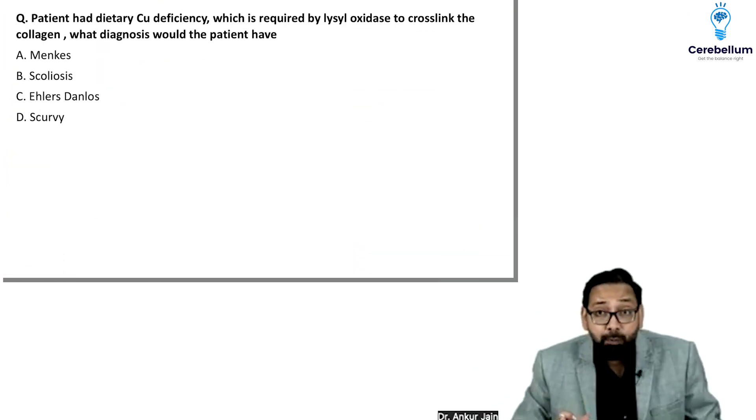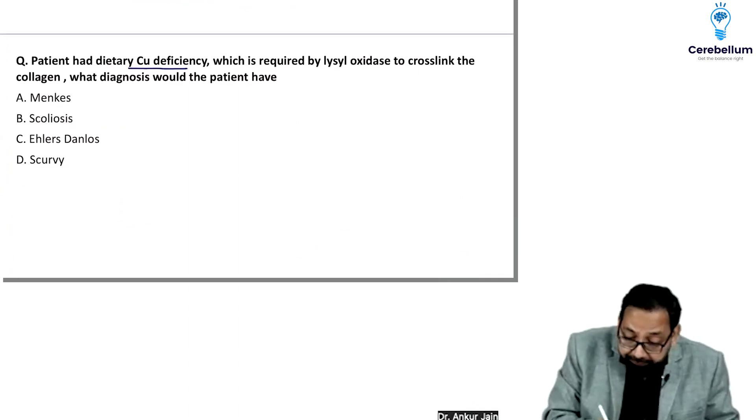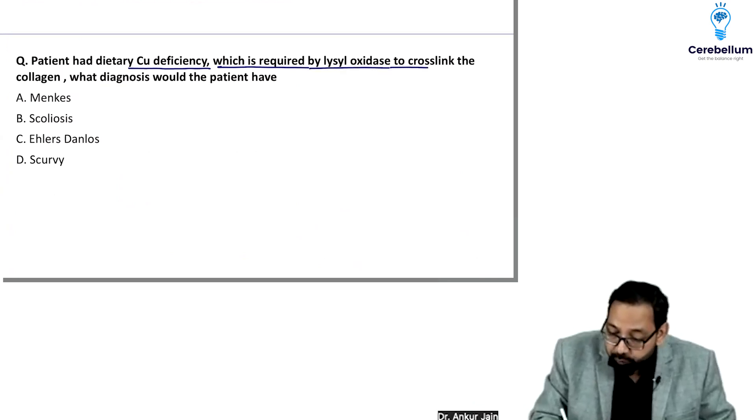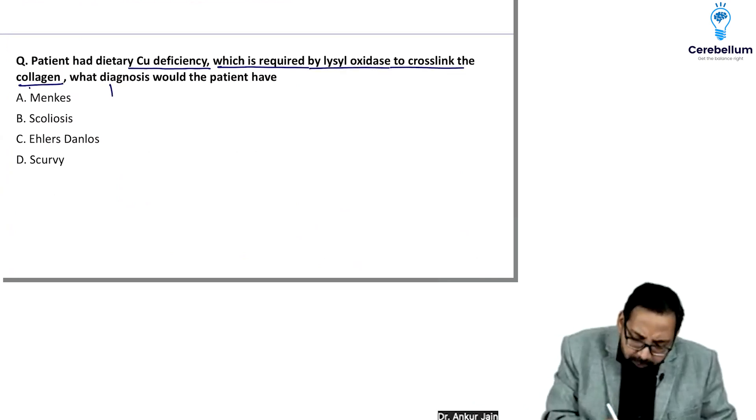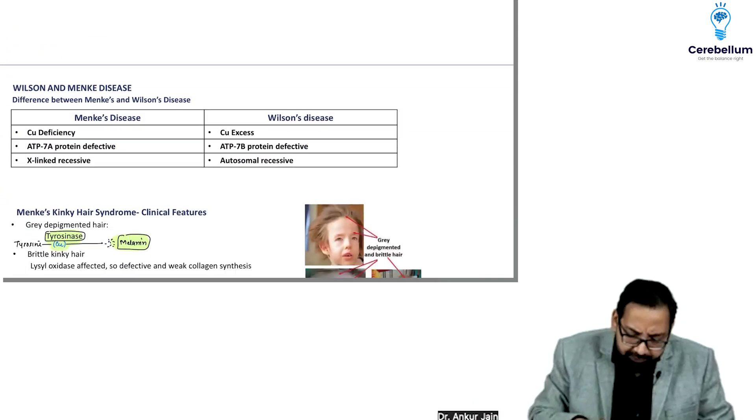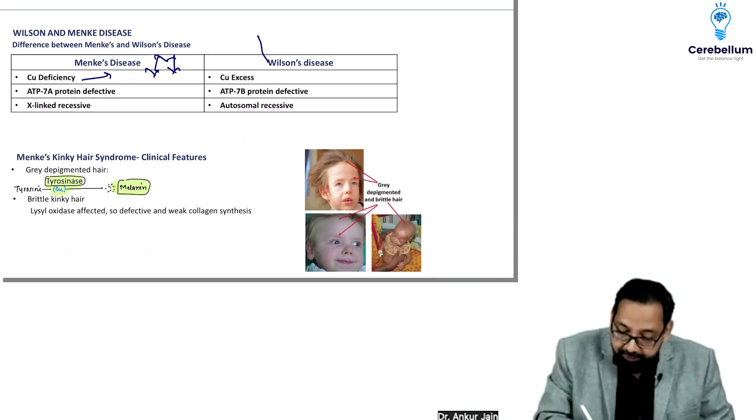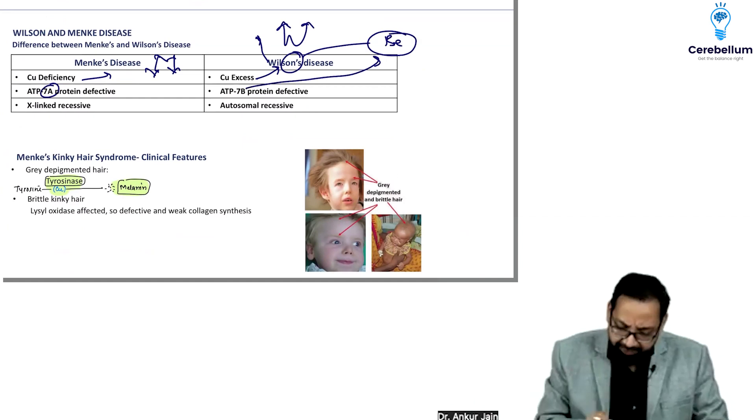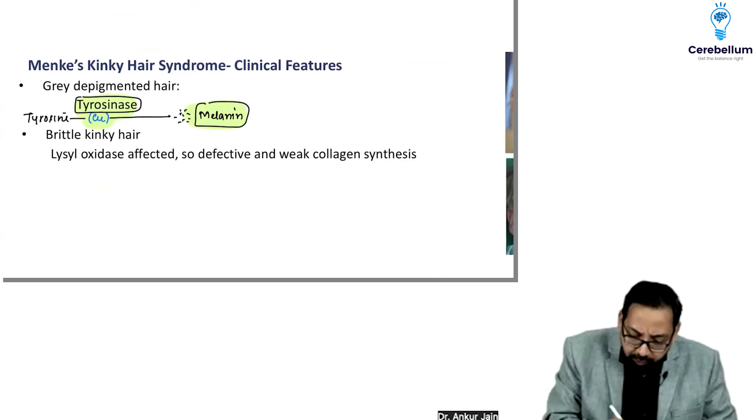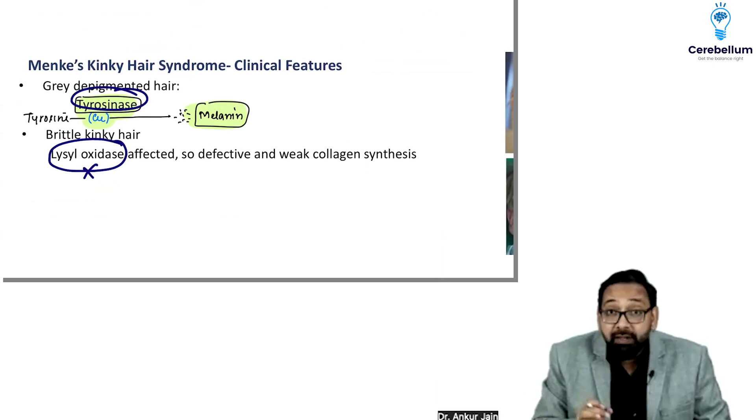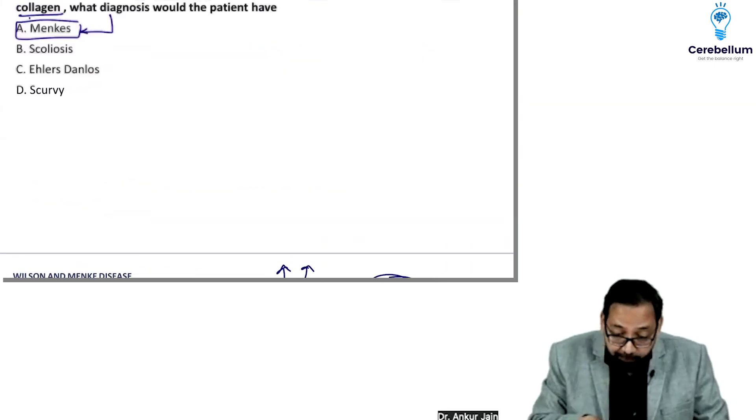Patient had copper deficiency. Menkes disease (kinky hair disease): M - Menkes means decreased copper, Wilson disease W means increased copper. Menkes disease involves ATP7A, Wilson involves ATP7B. Copper is cofactor for tyrosinase and lysyl oxidase. If lysyl oxidase is affected, there would be no cross-linking and collagen defects.